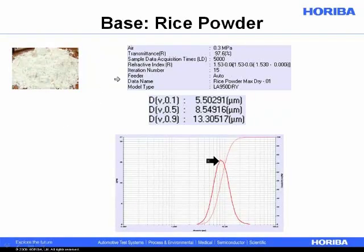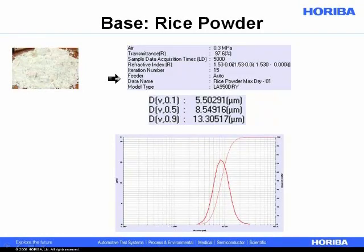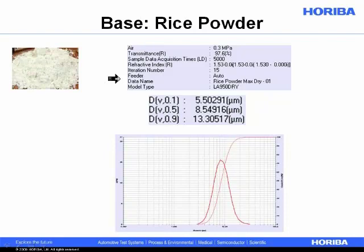We might start by looking at what is the particle size of our base powder, because when you're going to do mixing the powders, it actually helps if the powders are close in size. Otherwise, as you mix the powder, you might deal with some segregation. So if we know what our base is, that might help us decide what kind of size range we'd want our other components to be.